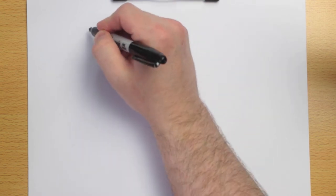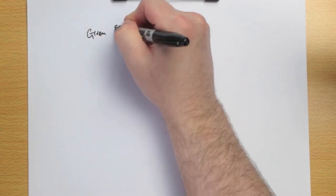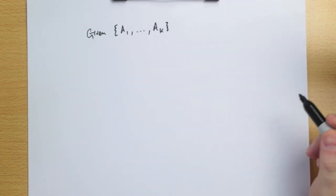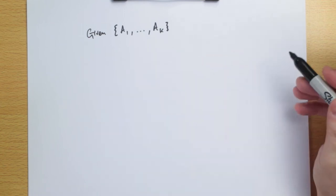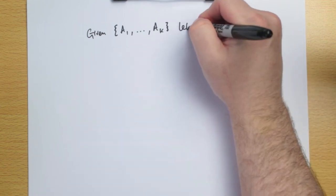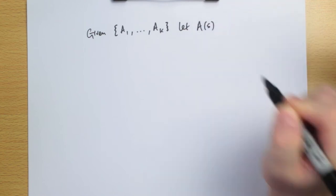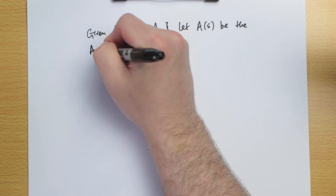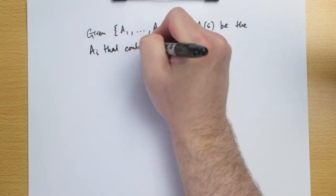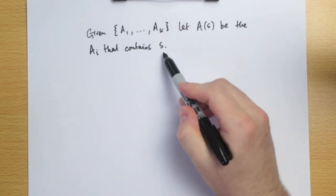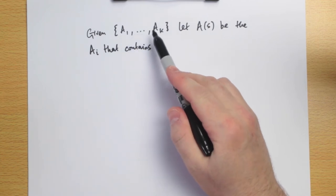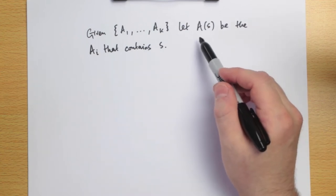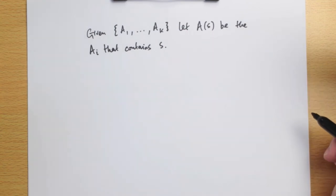First, we'll need some notation. If we're given an information structure that looks like this — a collection of events A1 to AK — so it's any partition of the state space, we're going to let A(S) be the particular Ai that contains S. For any state of the world S, we know that state belongs to one of these information sets in the information structure, and we'll label that particular information set as A(S). It's a very intuitive notation.